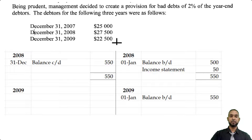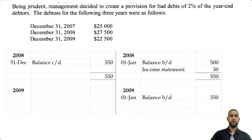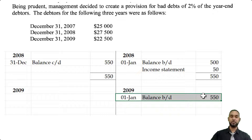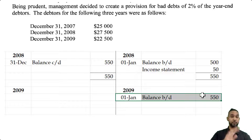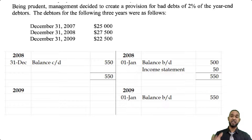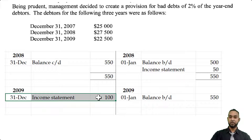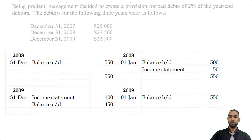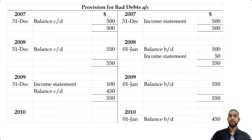Now in December 31st, 2009, the debtors balance is $22,500, 2% of which is $450. Now $450 is less than $550. We don't put negative figures in a T account because we have two sides that work against each other. So if this balance of $550 has to go down to $450, it needs to decrease by $100. The $550 is a credit balance in the account. To decrease the credit balance, you have to debit the account, so you're going to see $100 on the debit side. When we balance off the T account it will say $450, brought down to 2010. So the balance in the account is $450, which is 2% of $22,500.